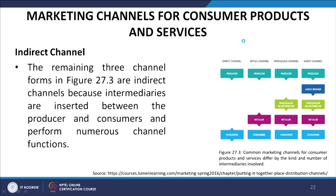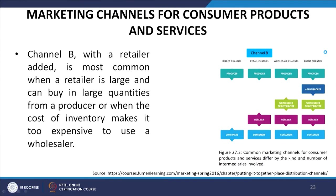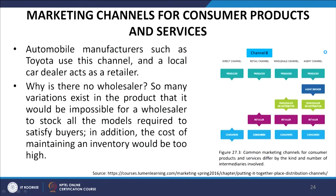The remaining three channels in Figure 27.3 are called indirect channels because intermediaries are inserted between the producer and consumers and perform numerous channel functions. Channel B, with a retailer added, is most common when a retailer is large and can buy in large quantities from a producer, or when the cost of inventory makes it too expensive to use a wholesaler. Automobile manufacturers such as Toyota use this channel, with a local car dealer acting as retailer. There is no wholesaler because the variety of models makes it impossible for a wholesaler to stock all required, and inventory costs would be too high.